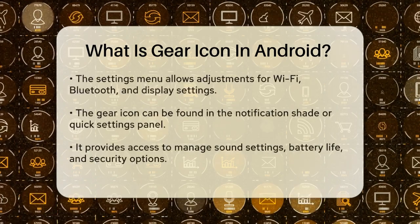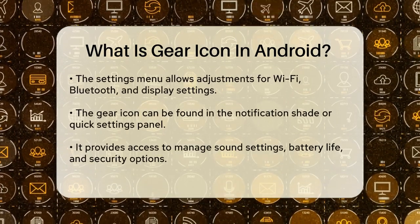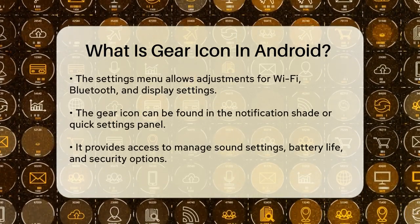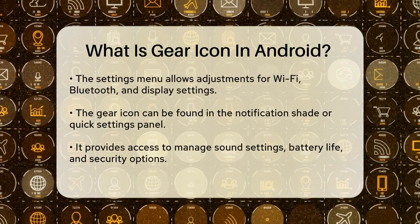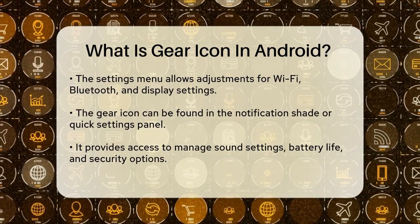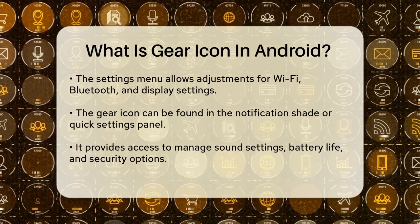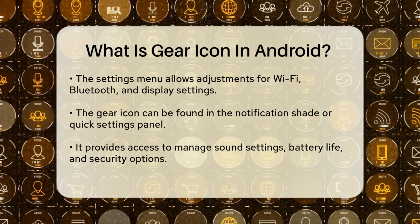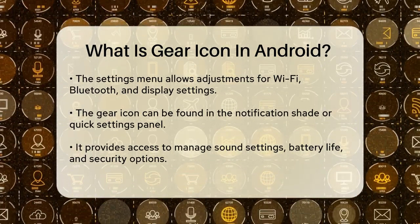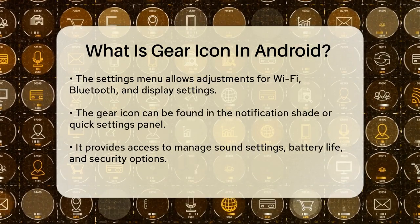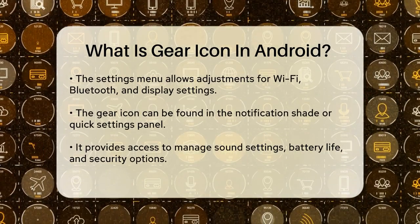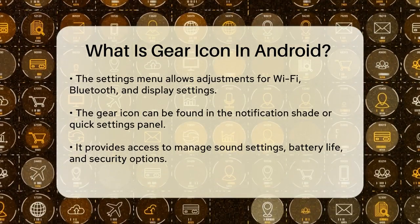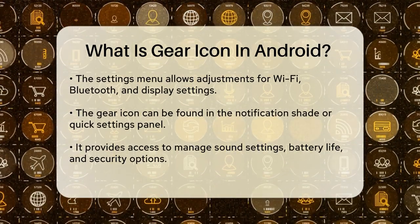When you see the gear icon, it usually means you're one tap away from accessing your device's settings. This could be the main settings app, where you can adjust everything from your Wi-Fi and Bluetooth connections to your display settings, and more.